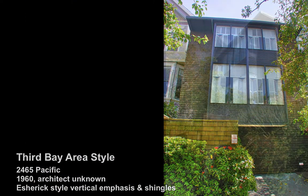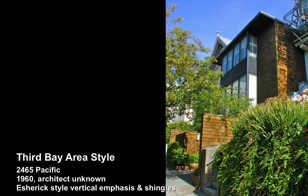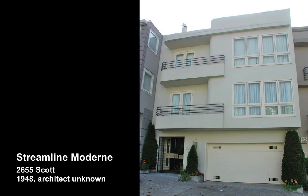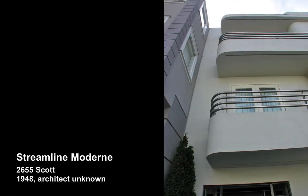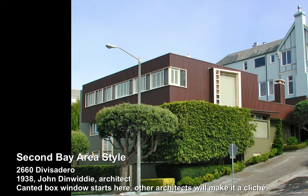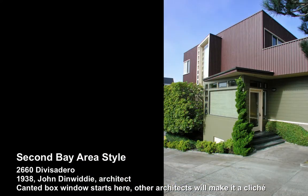Right around the corner, 2465 Pacific — we can see an Esherick-style vertical emphasis on that building. Here, Streamline Modern. You could argue that the rails are a bit bulky for that style, and I would agree with you. Here, the first use of the canted box window.